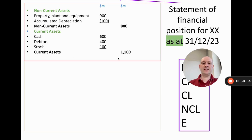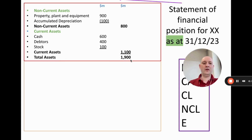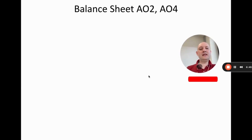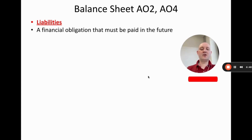The total current assets is 1.1 billion — those three added together. Totals go into the right-hand column: 900 minus 100 gives 800 for non-current assets, and 600 plus 400 plus 100 gives 1.1 billion for current assets. Total assets is 1.9 billion, which is 800 plus 1.1 billion. That's assets done. Now we move on to liabilities — things where we owe money to someone else, effectively a big minus on the balance sheet.